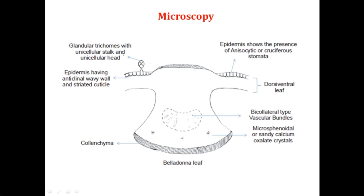These are the diagnostic features: epidermal cells with anticlinal wavy walls. The most important characteristic feature is trichomes — it shows the presence of uniseriate, multicellular covering trichomes as well as glandular trichomes. Characteristic stomata are anisocytic, and the crystals are microspheroidal or sandy crystals of calcium oxalate.